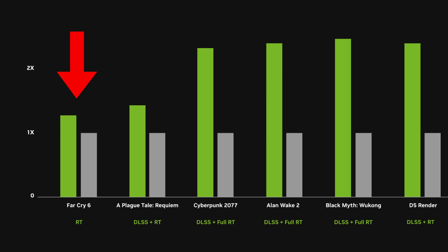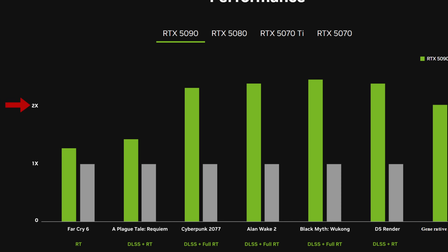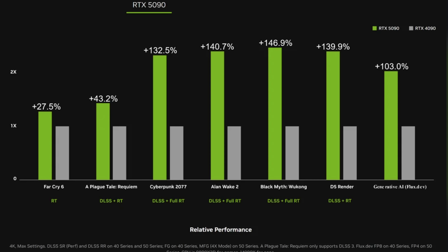People point to Far Cry 6 as a cleaner data point since it doesn't support DLSS and only uses ray tracing — native 4K with ray tracing enabled, where the 5090 is faster than the 4090. The issue is the scaling of the chart: it only shows 0, 1x, and 2x, with no numbers in between. People on Reddit are estimating around 30% improvement, which looks about right, but we won't know for sure until official review day.